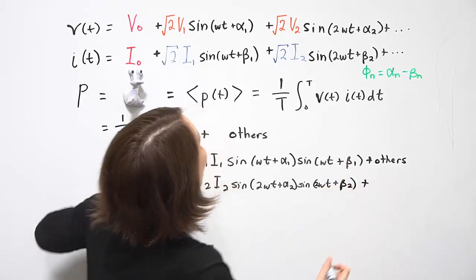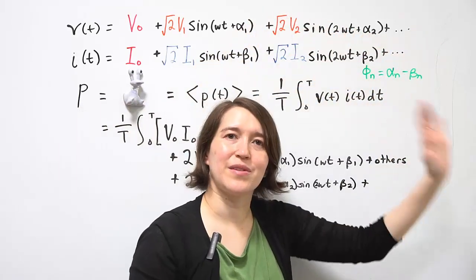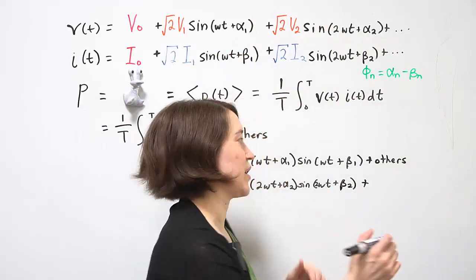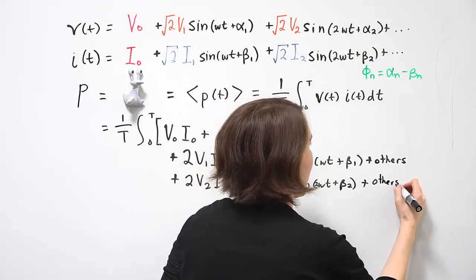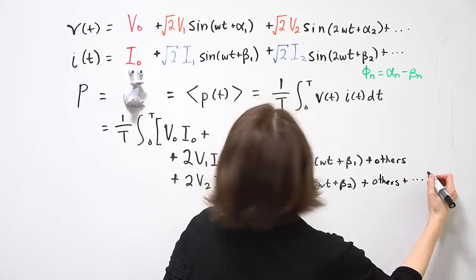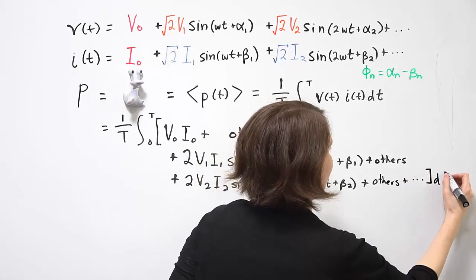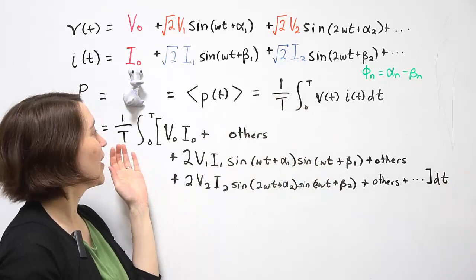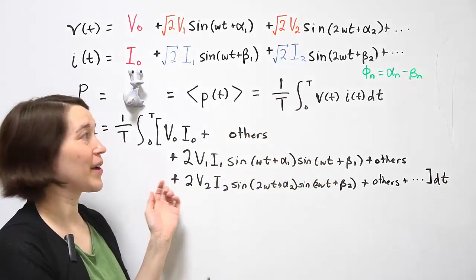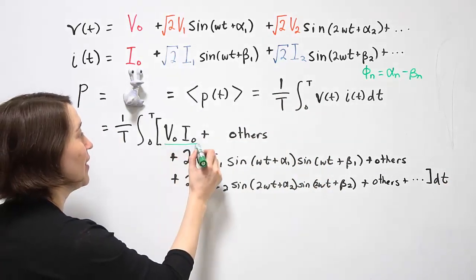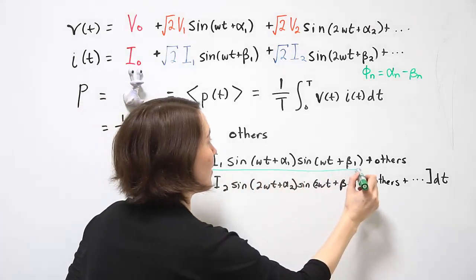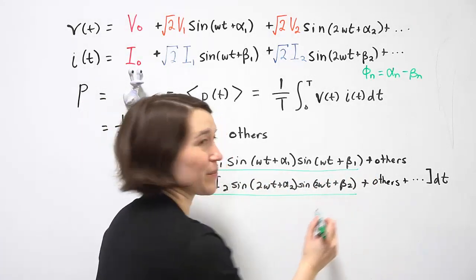And then we're going to multiply that by higher terms. Again, the frequencies are different, so they're all going to go to zero. And so on. The important terms that are going to come out after we take the integral are going to relate to these terms.